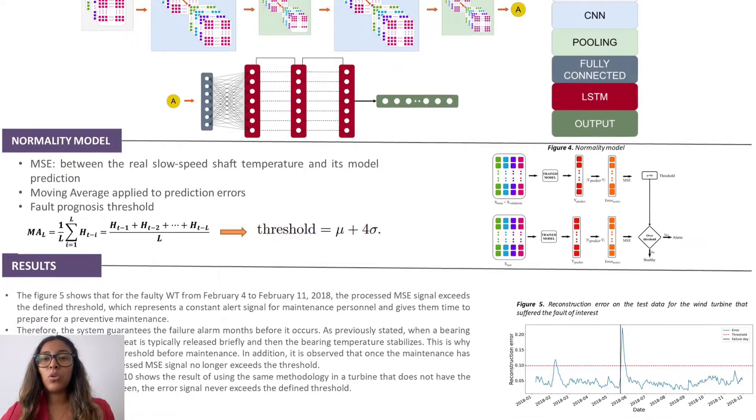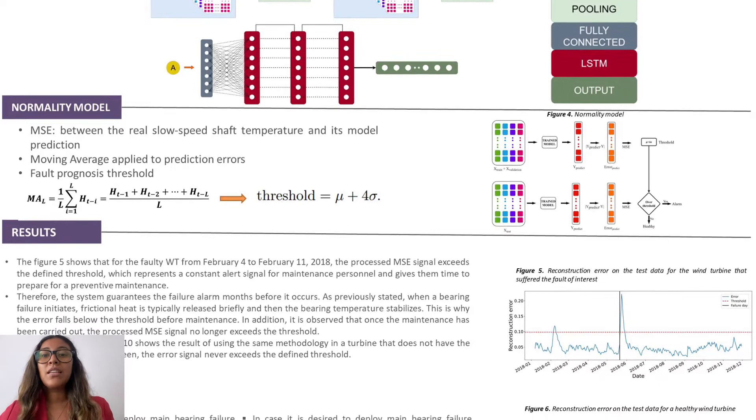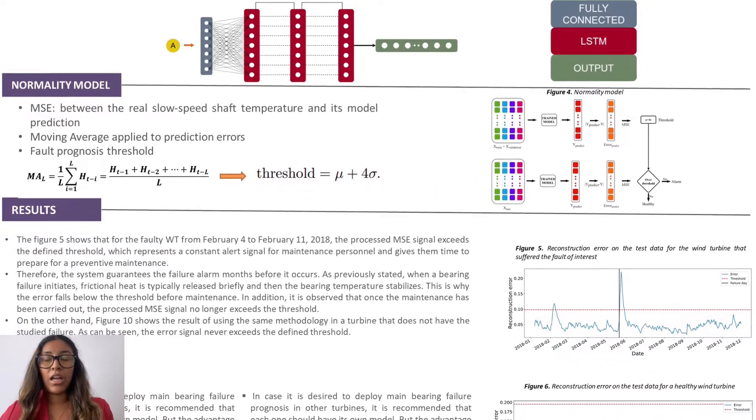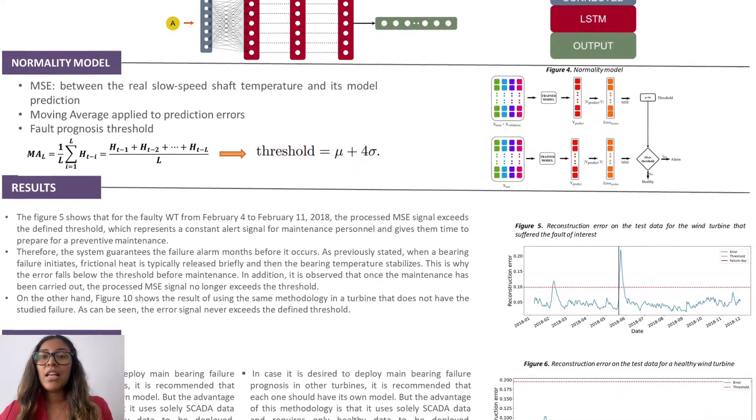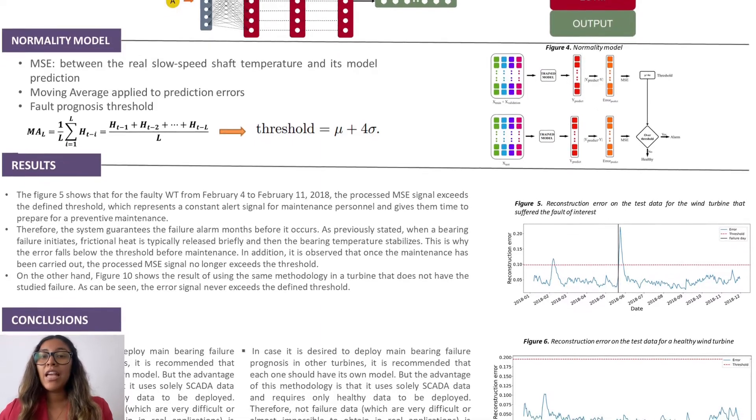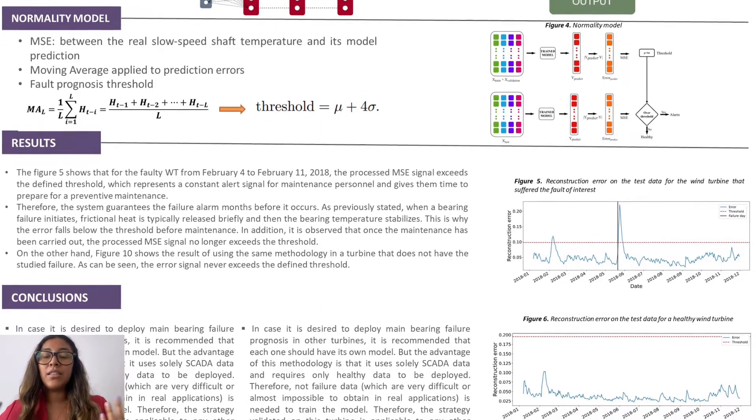To test our network, we use a faulty turbine and the perceived MSE signal exceeds the defined threshold. As we can see, on the other hand, we use a healthy turbine and the error signal never exceeds the defined threshold.